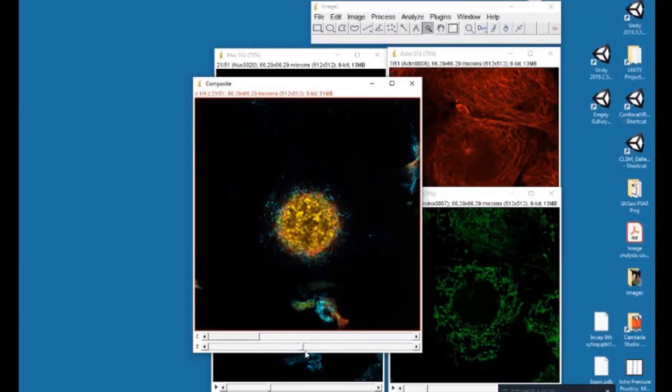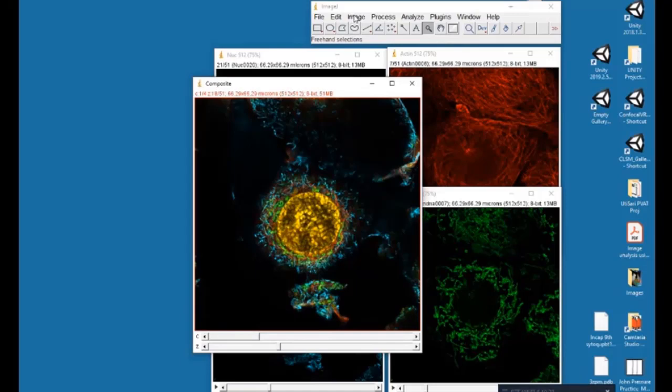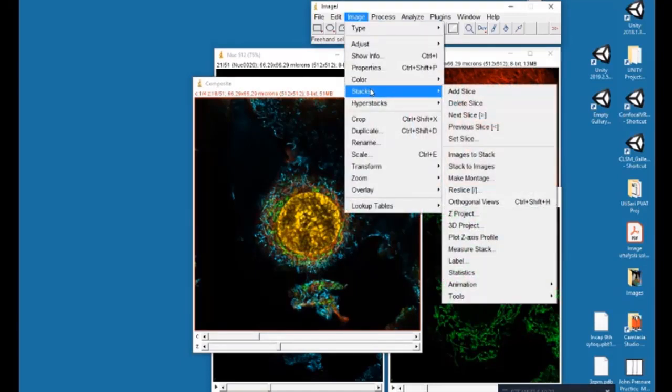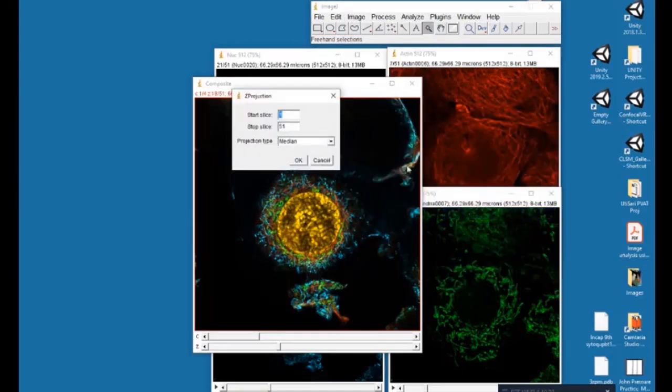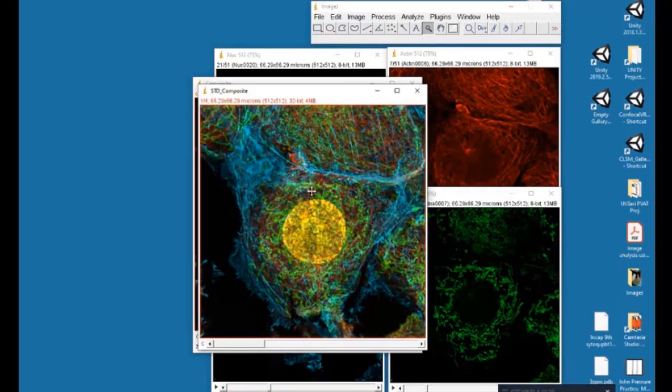I hope you can see that. Here we see a four channel COS cell. It's been labeled with stains for the nucleus, actin, tubulin, and mitochondria. We can combine these four channels to make a z-projection and I've shown that in a previous tutorial.